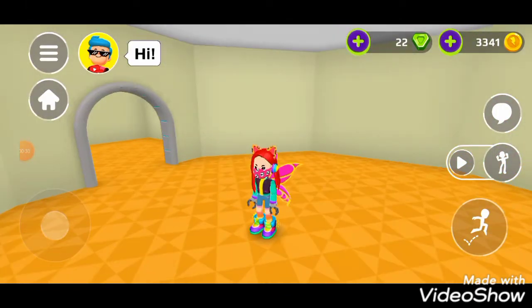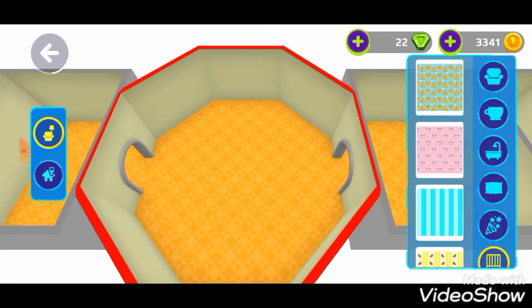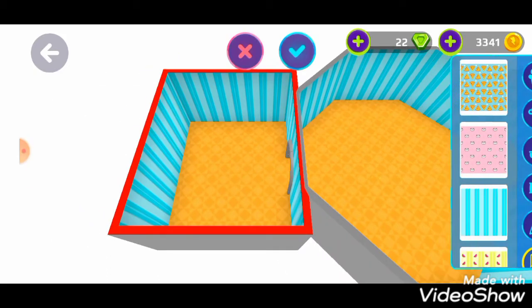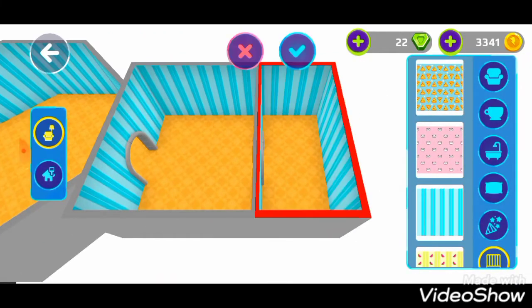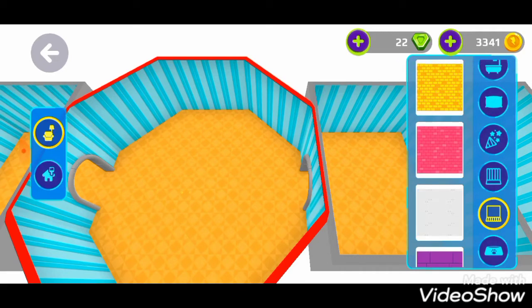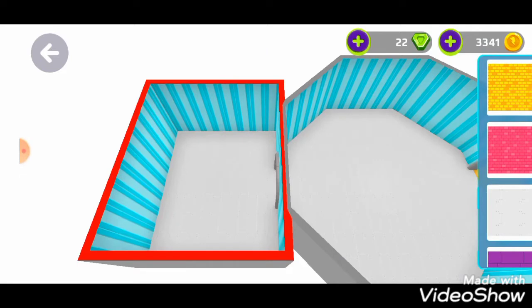But we'll start decorating it. Let's start. So first of all, let's put the wall color. That's pretty cute. Now let's decorate it like this. And now we have to bring this ground. This ground looks like a hospital floor.